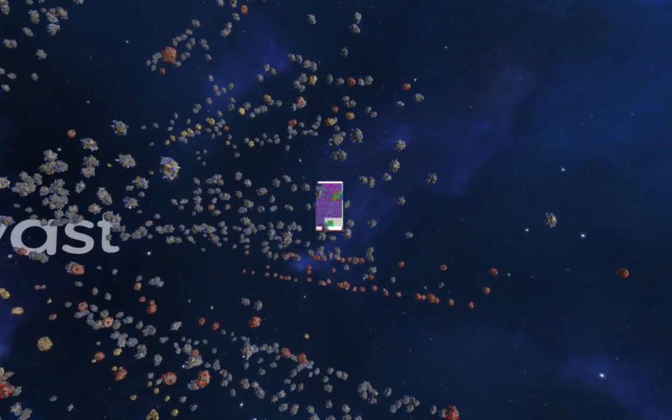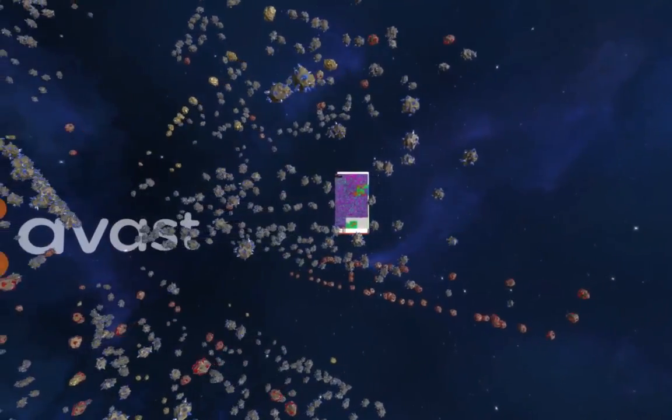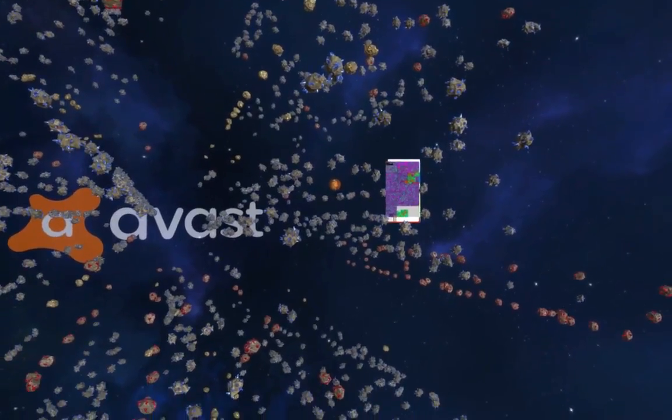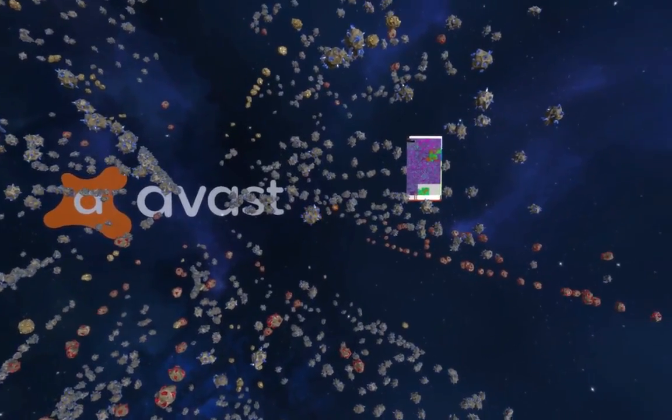We can predict if files are likely to be harmless or dangerous by looking at their position in relation to each other, as well as their internal structure. Do you see any differences?